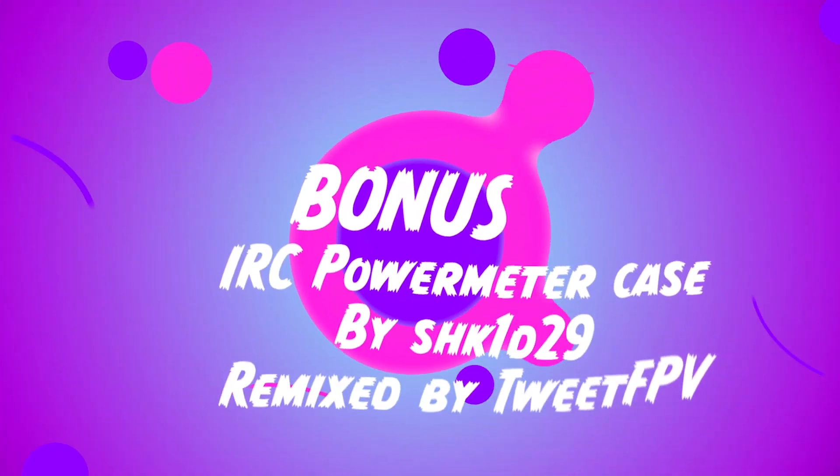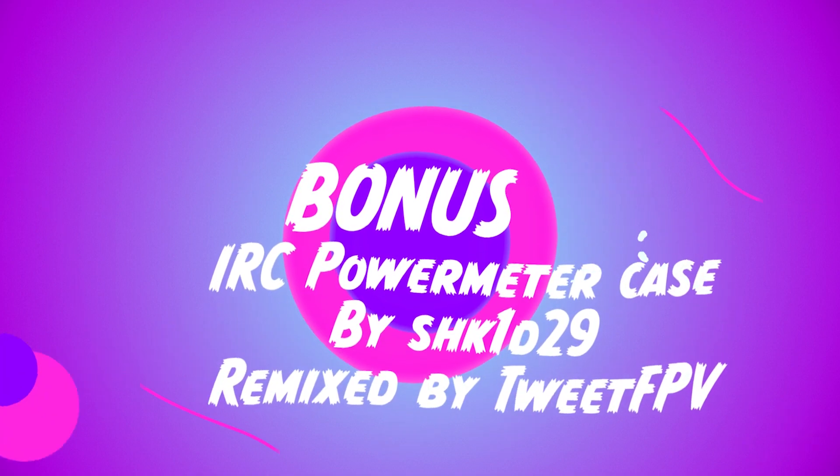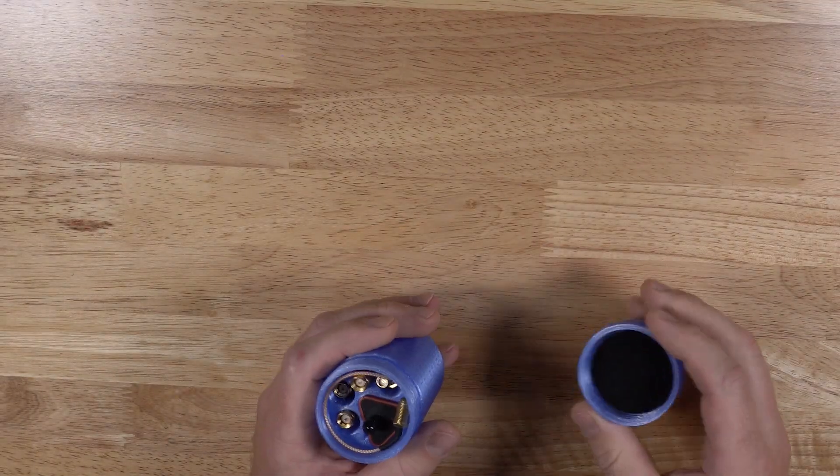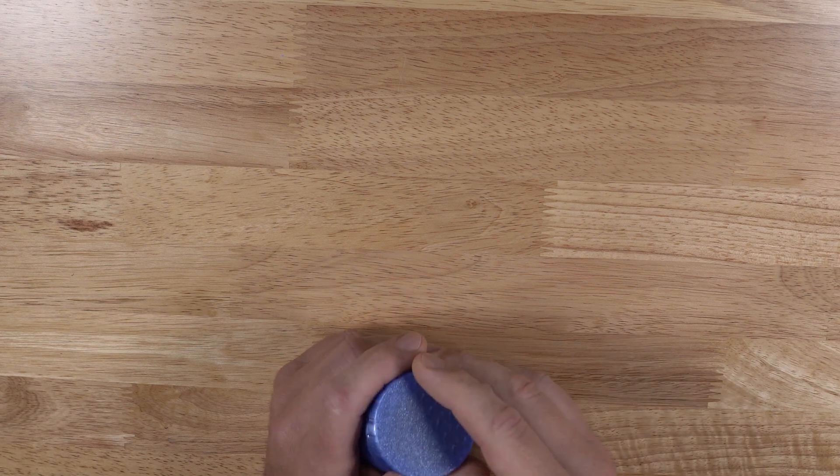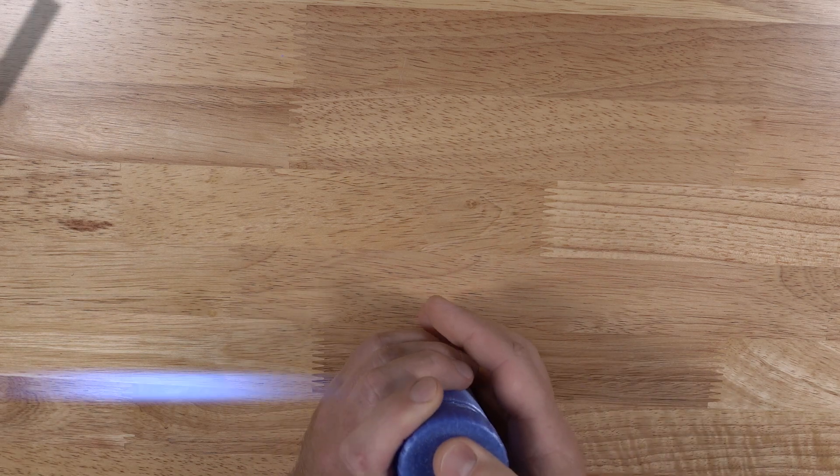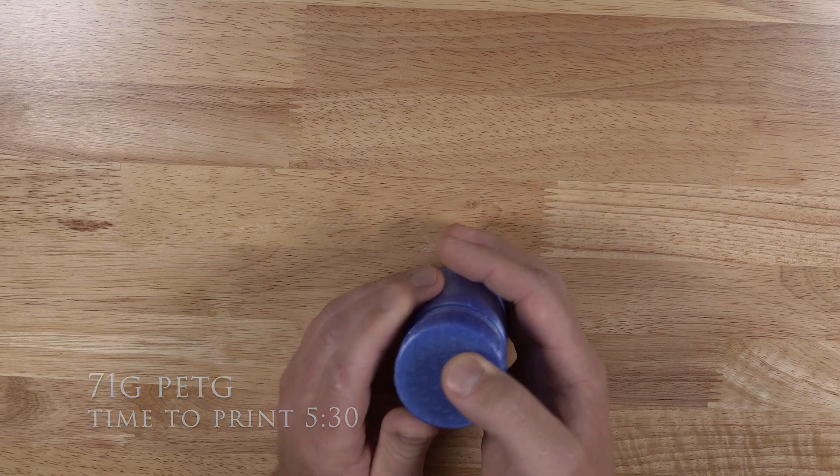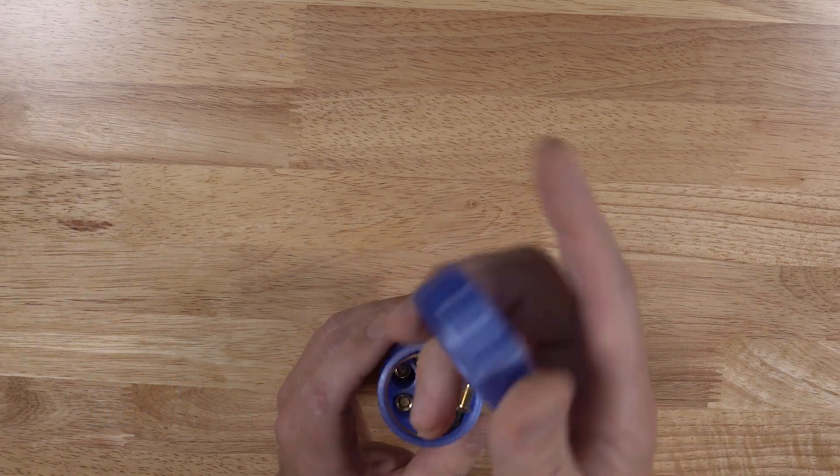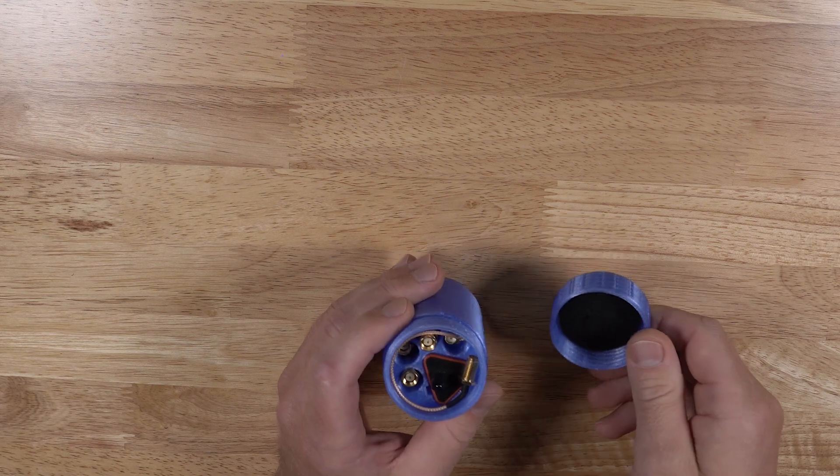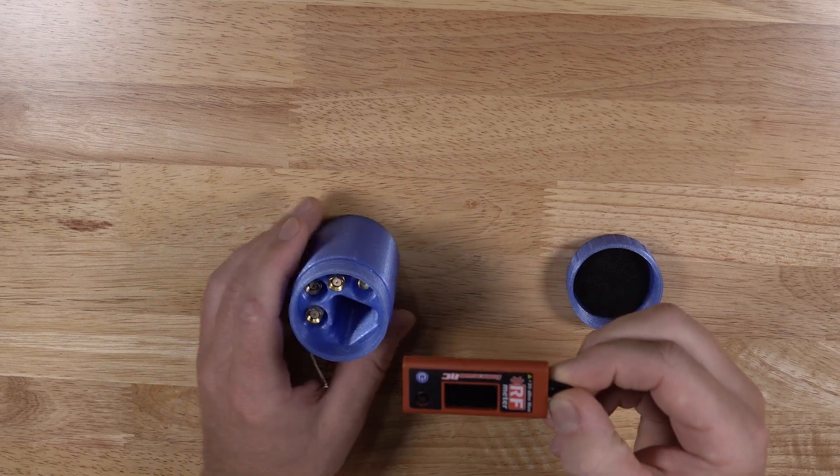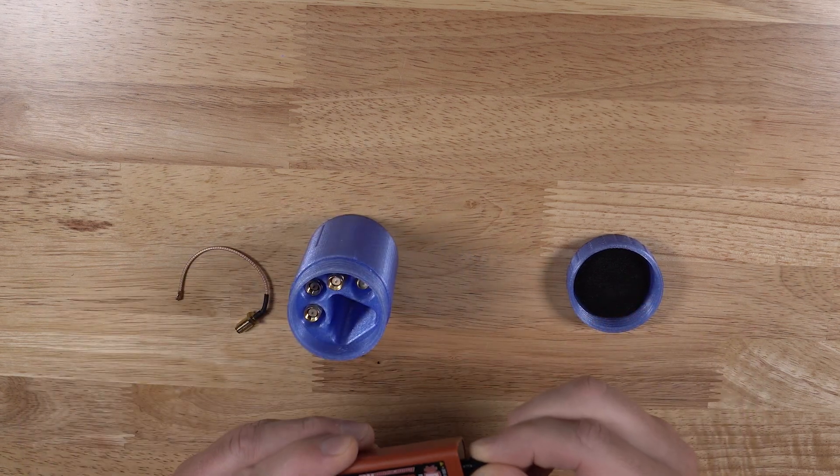For everybody out there who's getting the ImmersionRC power meter, now they're back in stock. This is an ImmersionRC RF power meter case by shk1d29, except I remixed this one. And again, I'll put that on Thingiverse there for you. One of the things with the ImmersionRC power meter is anything over, what is it, 800 milliwatts, you really need an attenuator.